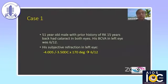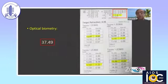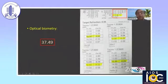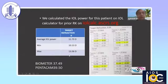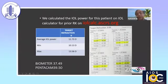I will now present some lessons I have learned over time. This was a 51-year-old male with a prior history of RK 15 years back, who had cataract in both eyes. Best corrected visual acuity was 6/12, and his subjective refraction was minus 4, minus 3.5 at 170 degrees with 6/12 vision. On the IOL Master, the keratometric values were 37.49, giving a power of 13.5, and the cylindrical axis was in good agreement with the refraction. But on the Pentacam, the keratometric value was 39. When we targeted refraction of 0, the minimum IOL power was 11.73 and maximum was 13.56, which matched the Lens Star, not the Pentacam.